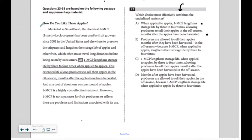So this particular paragraph is talking about how do you like those apples. Marketed as SmartFresh, the chemical 1MCP has been used by fruit growers since 2002 in the U.S. and elsewhere to preserve the crispness and lengthen the storage life of apples and other fruit, which often must travel long distances before being eaten by consumers.